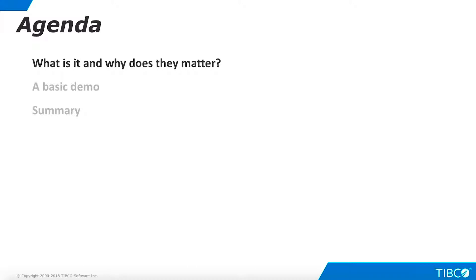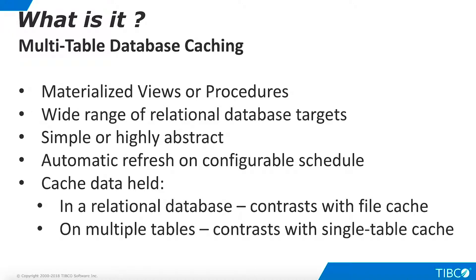TDV caching enables data from virtual views and procedures to be materialized to a wide range of relational database targets. When a view is cached, its data is physically stored on the cache target. When end users access the view, TDV retrieves data from the cache rather than from the primary physical data sources. When a procedure is cached, the results produced by specific input parameters, which are called variants, are physically stored on the cache target whenever a new variant is executed. When subsequent users request the same variant, TDV retrieves data from the cache rather than execute the actual procedure.